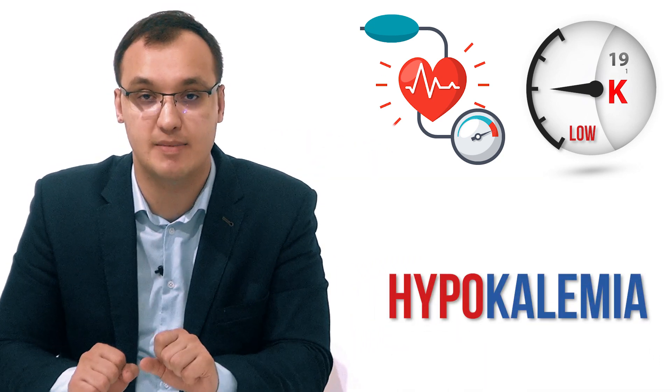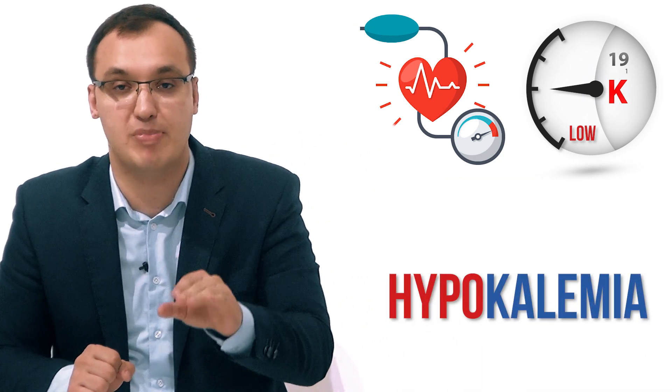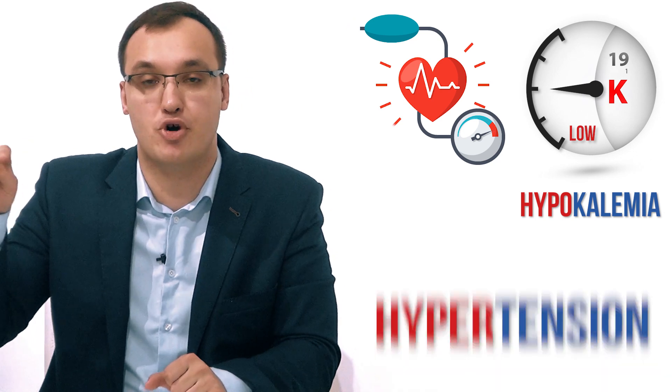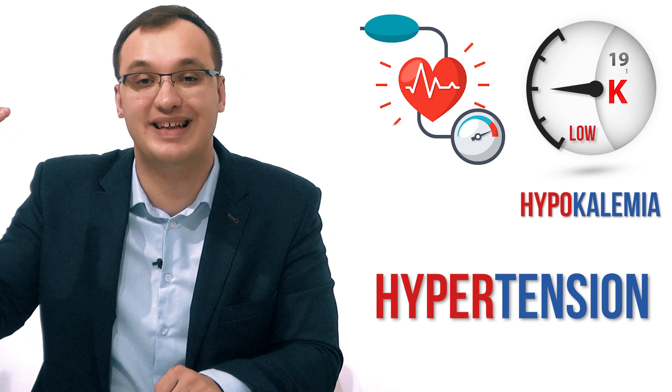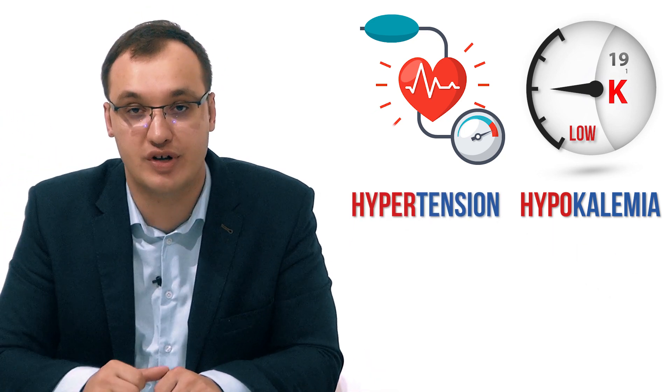Then we look at the lab values and see that potassium is very low. So we have hypokalemia, meaning a low amount of potassium in the blood, and we have hypertension, which means high blood pressure in the body.